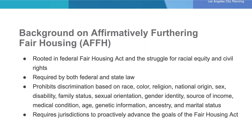These principles stem from the Fair Housing Act adopted following the civil rights movements of the 1960s. The act prohibits housing discrimination based on race, color, religion, national origin, sex, disability, family status, sexual orientation, gender identity, source of income, medical condition, age, genetic information, ancestry, and marital status. A new requirement for this cycle is that the housing element must affirmatively further fair housing — meaning it must proactively seek to advance the goals of the Fair Housing Act and reduce racially and ethnically concentrated poverty and disparities in access to opportunity.